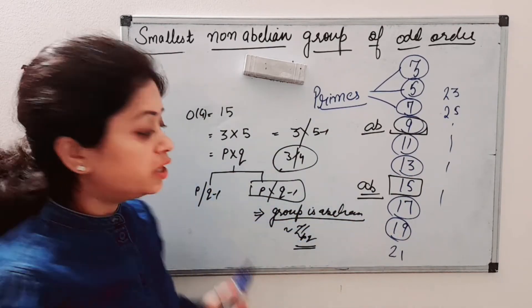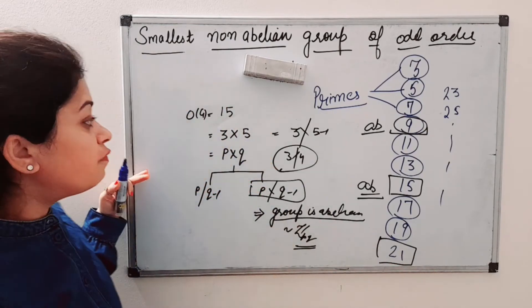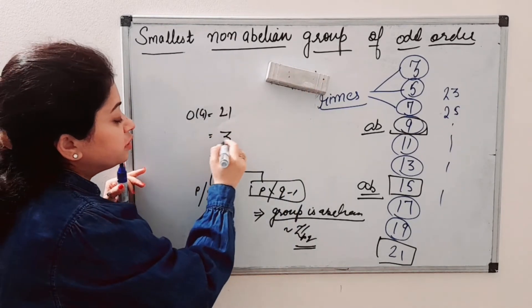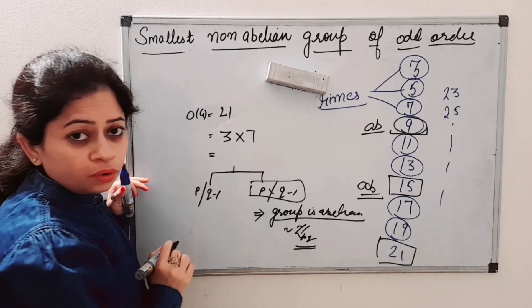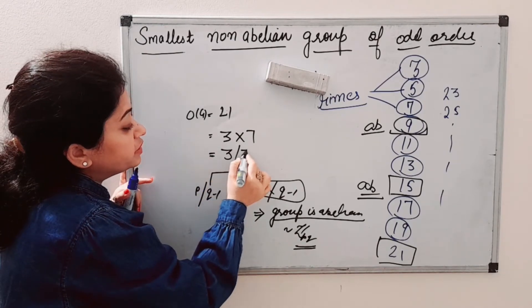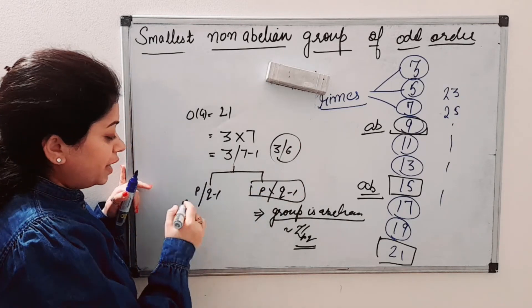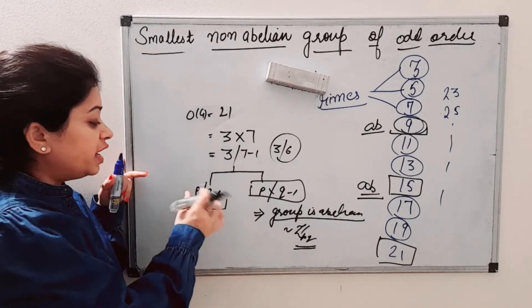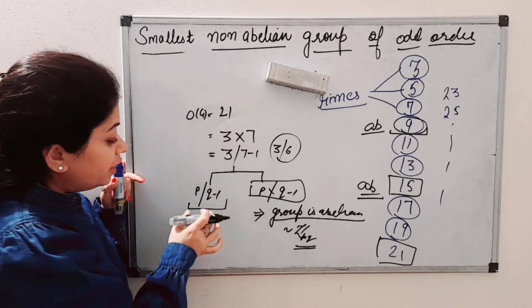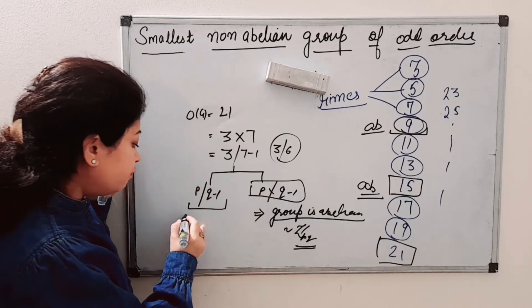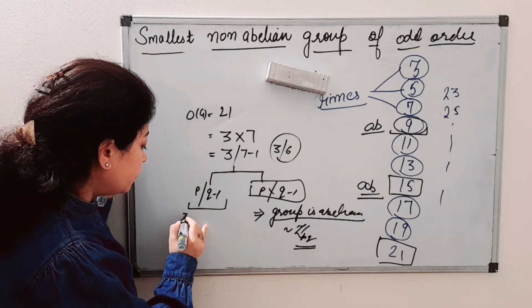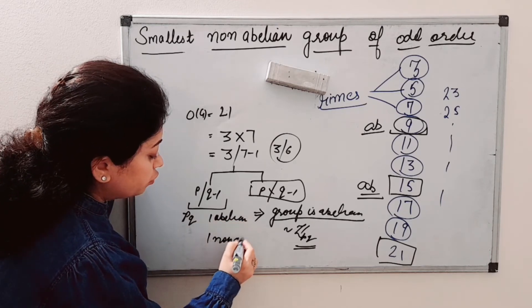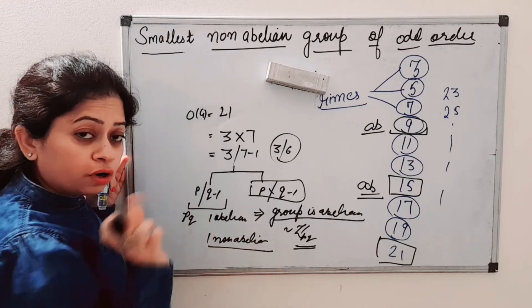Next we come to the group of order 21. Order 21 = 3 × 7, which is of the form pq. Now 3 divides (7 − 1) = 6, so this group falls in the other category. When we have a group of order pq and p divides (q − 1), then we have one abelian group of order pq and one non-abelian group, up to isomorphism.